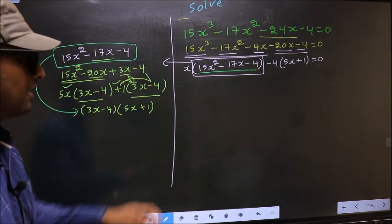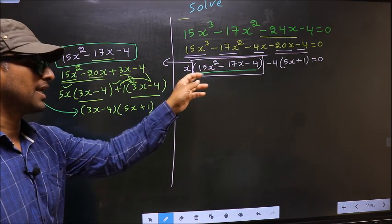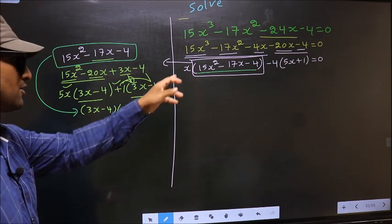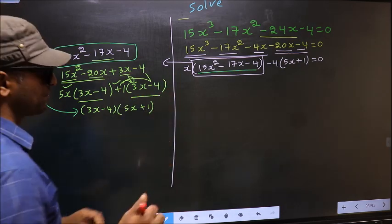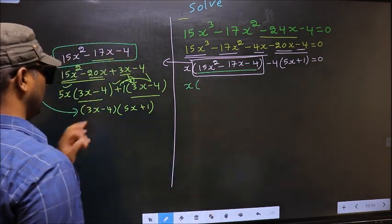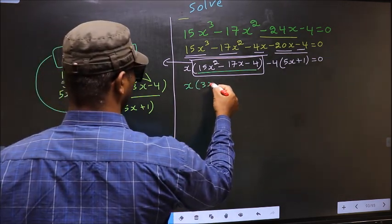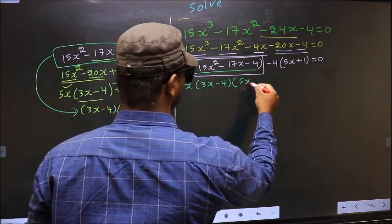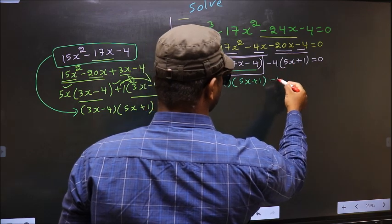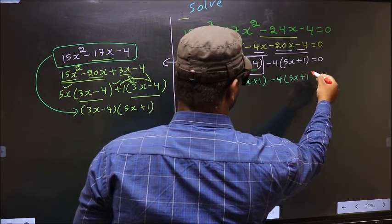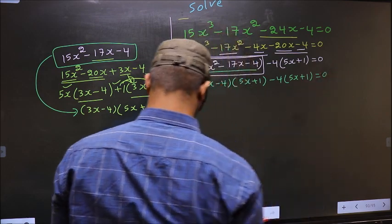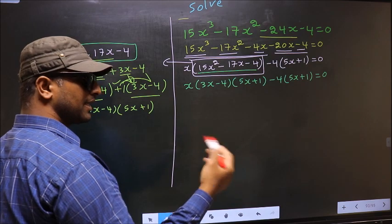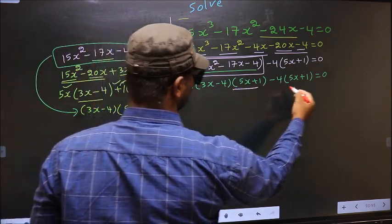In place of this quadratic, now I will write this factored form. So this equation will change to: x times (3x minus 4) times (5x plus 1). Over here, no change, equal to 0. From this entire equation, what can be taken out common is 5x plus 1.